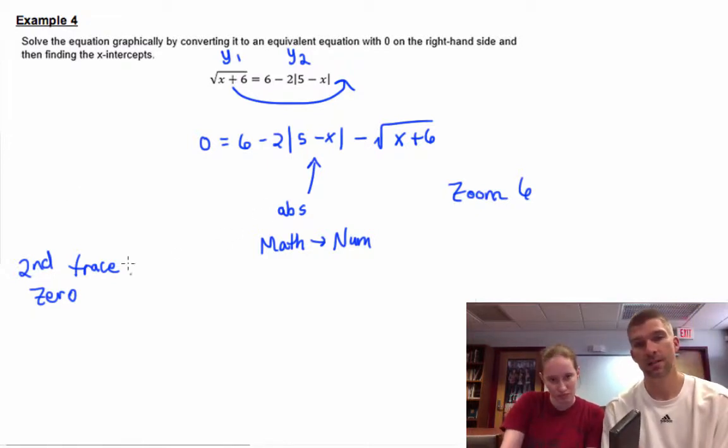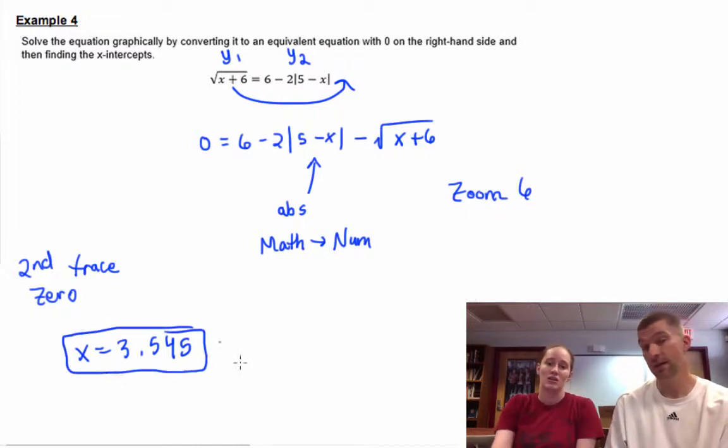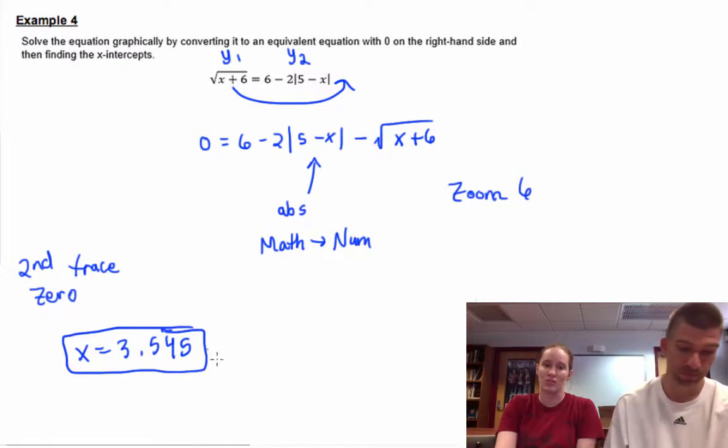The zero closest to the origin is 3.545. Notice I used three decimal places. Those AP graders really like to see three decimal places, so that's how we're going to practice.